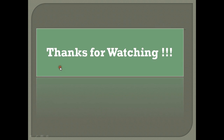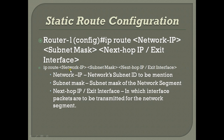Now, how to configure it — this is the command: 'ip route', then the network segment address, for example 192.168.1.0, and the subnet mask for that as 255.255.255.0, and then the next-hop or exit interface.